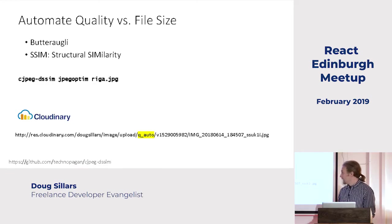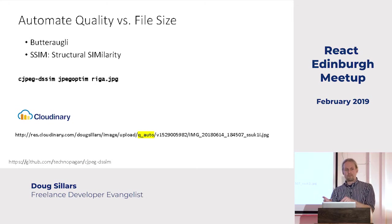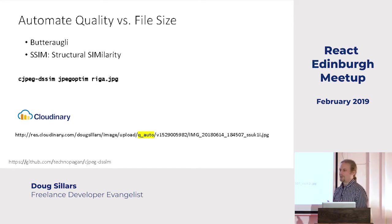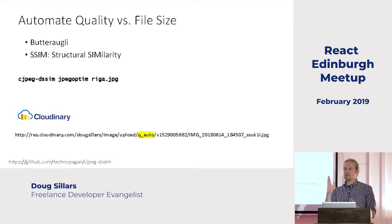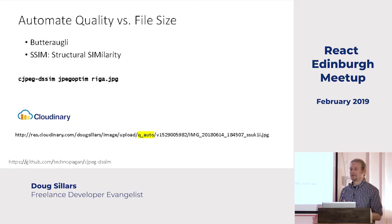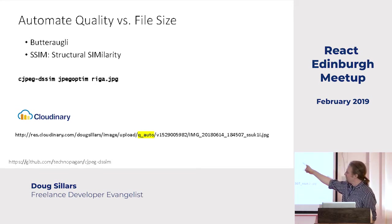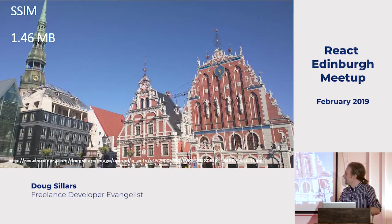Google has a tool called Butteraugli — all of Google's compression work is done in Switzerland and named after pastries. The other approach is structural similarity. These tools look for the sweet spot where you lower quality enough that the human eye can't tell a difference. There's cjpeg-dssim as a tool, and Cloudinary can do it — you set Q-Auto and it generates that image on the fly. We're at 1.46 megabytes, saving another 400K from the 85% image. That's worth doing.